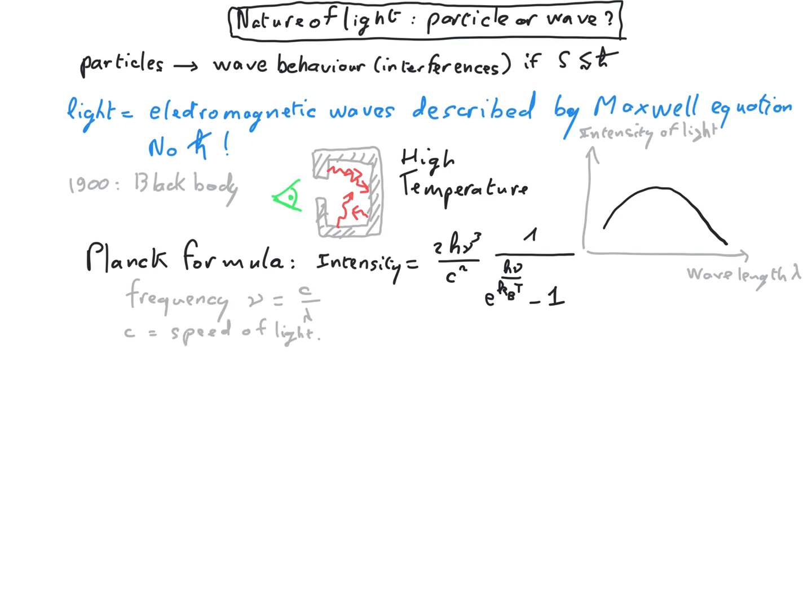It's the first time the Planck constant h was introduced in physics. Now we more often use h-bar which is the reduced Planck constant which is just h divided by 2 pi.